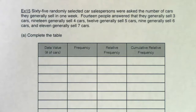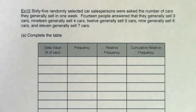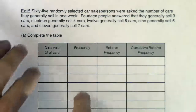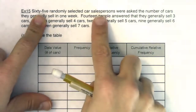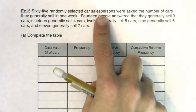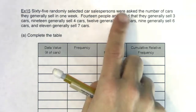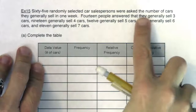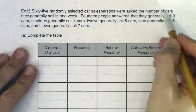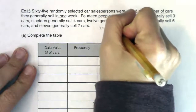I always start with: what is the variable? 65 randomly selected car salespersons were asked the number of cars they generally sell in one week. 14 people answered they generally sell 3 cars, 19 sell 4, 12 sell 5, 9 sell 6, and 11 sell 7. My variable is the number of cars sold in one week.